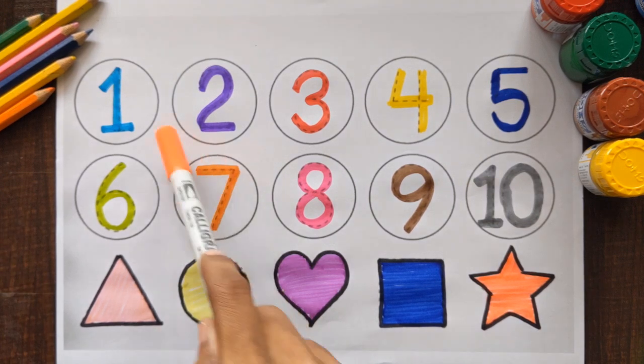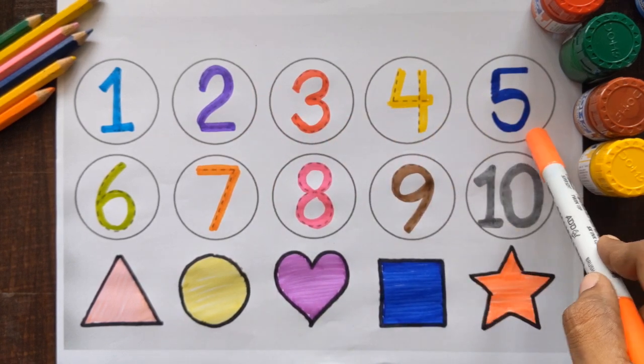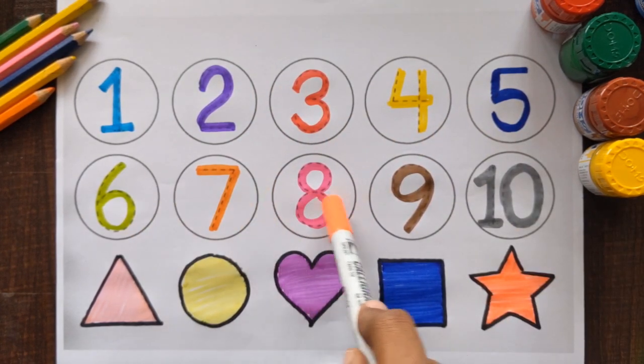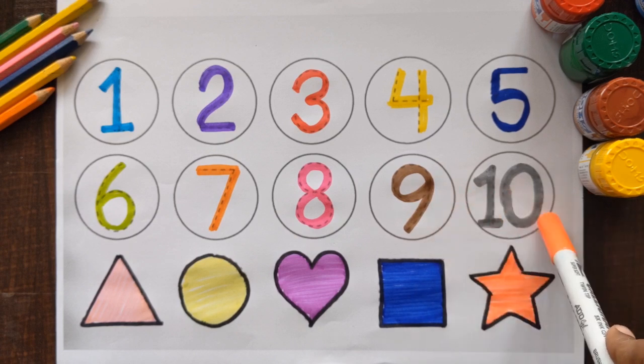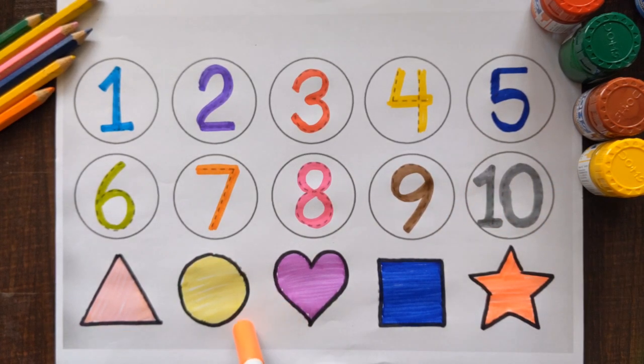Let's revise with me. 1, 2, 3, 4, 5, 6, 7, 8, 9 and 10. Learn the shape's name. Triangle, light pink color. Circle, yellow color. Heart, purple color.